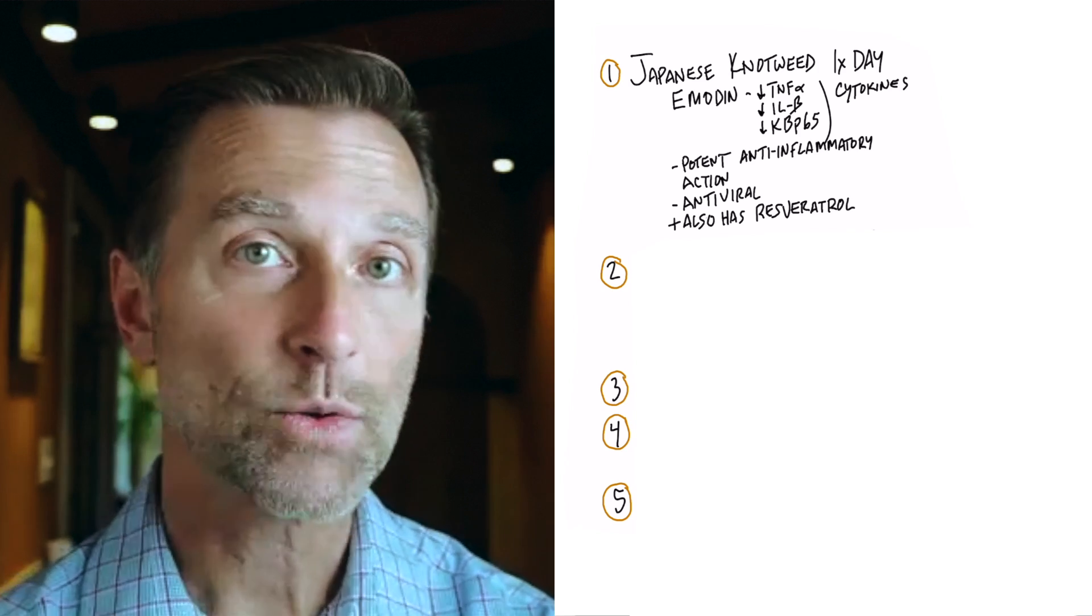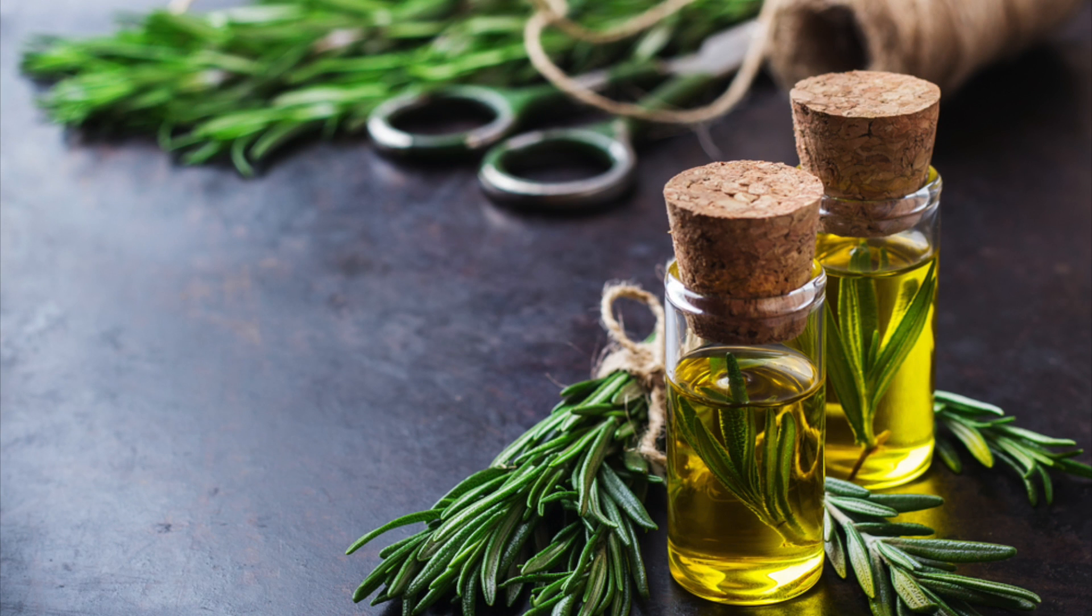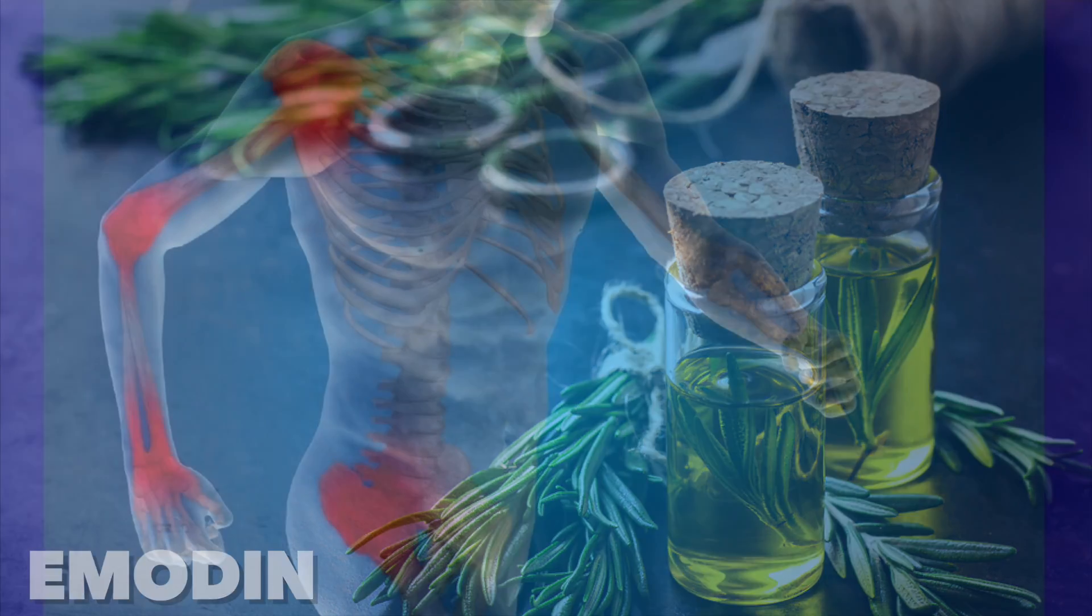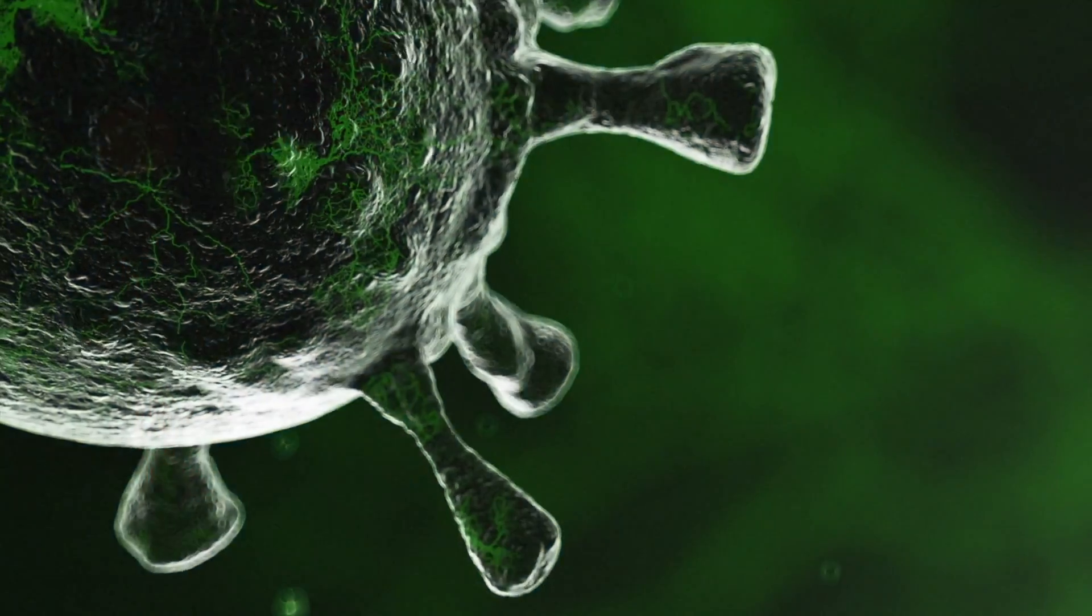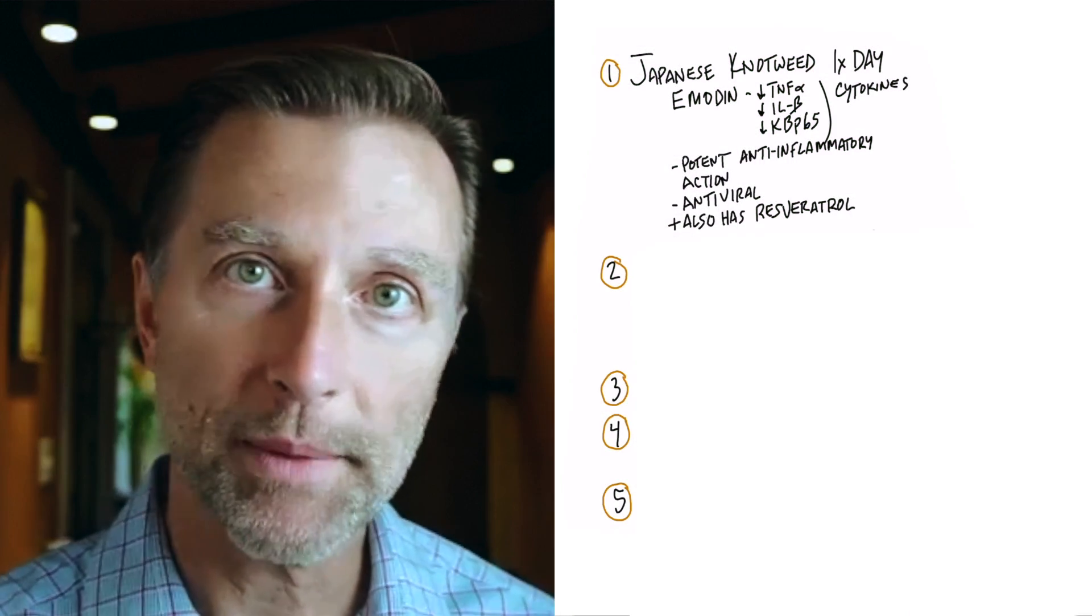Number one, it has resveratrol, which we all know is an anti-aging phytonutrient, but it also has something else called emodin. That is a natural chemical that decreases inflammation, and also it's antiviral. And so that would be the first remedy I would recommend.